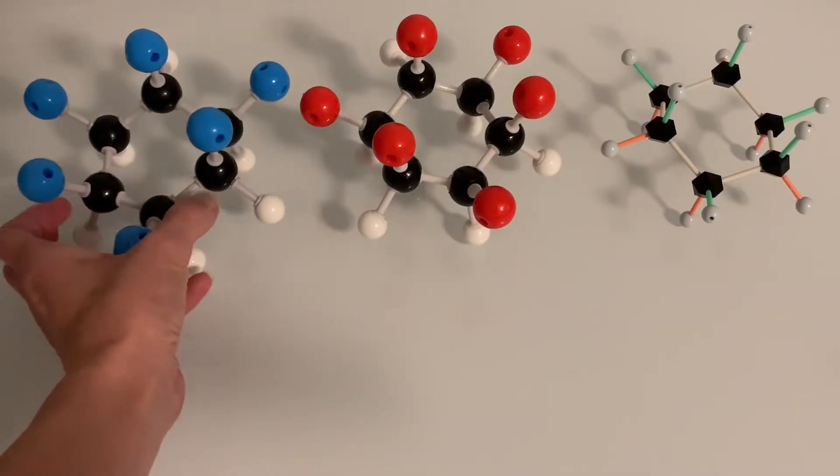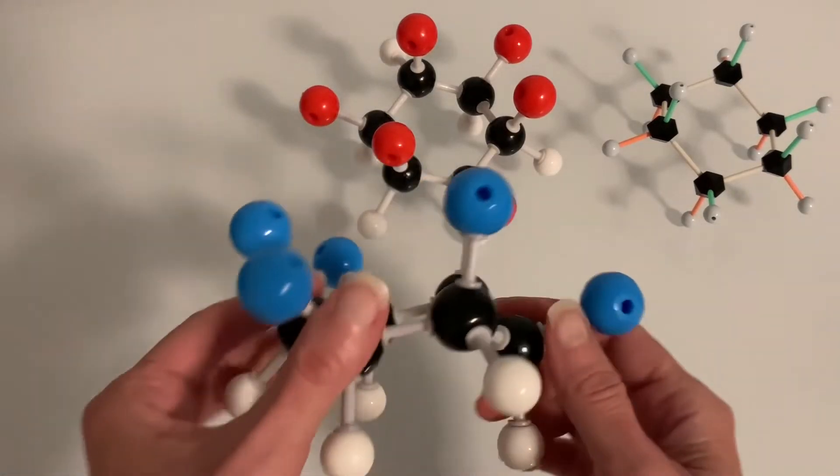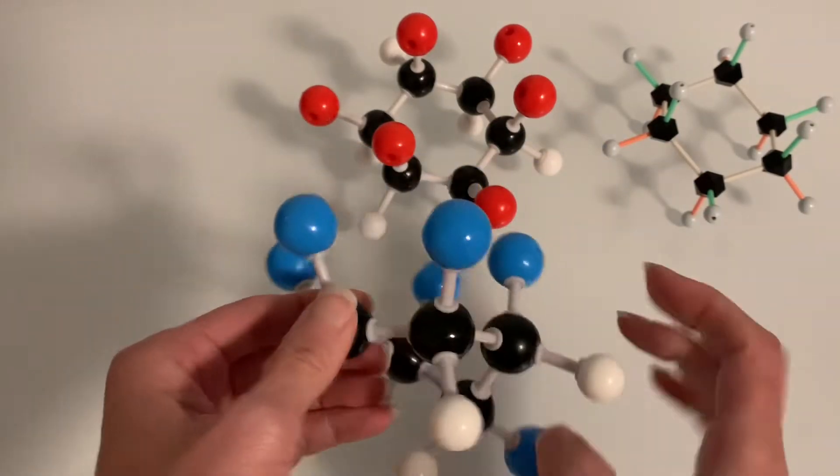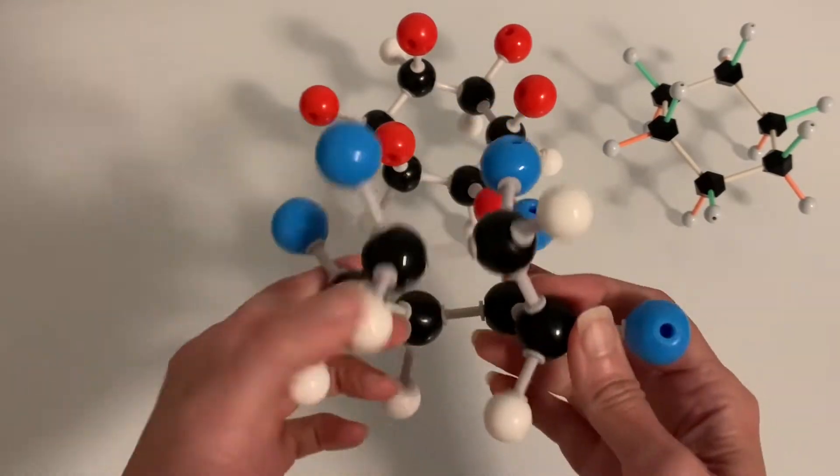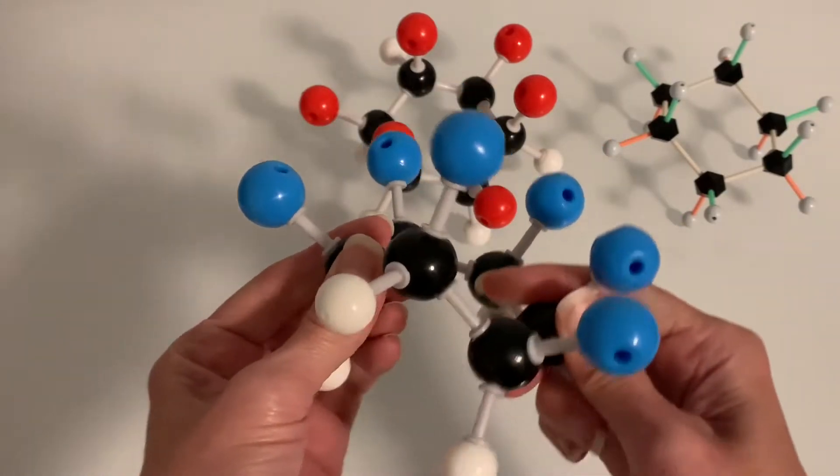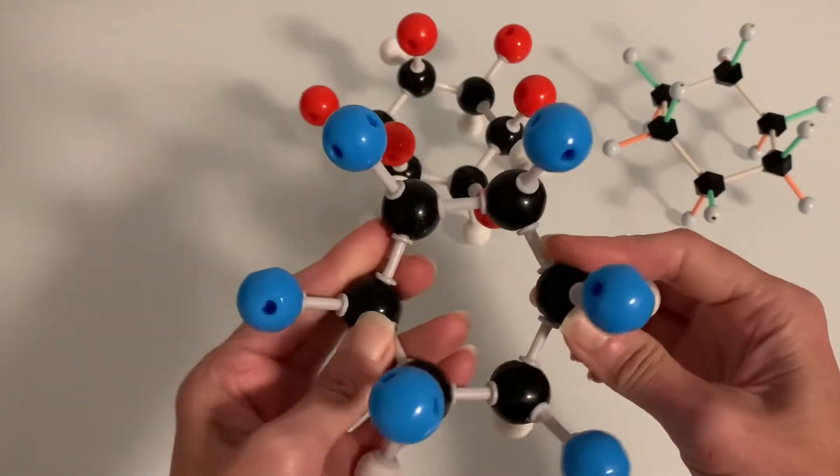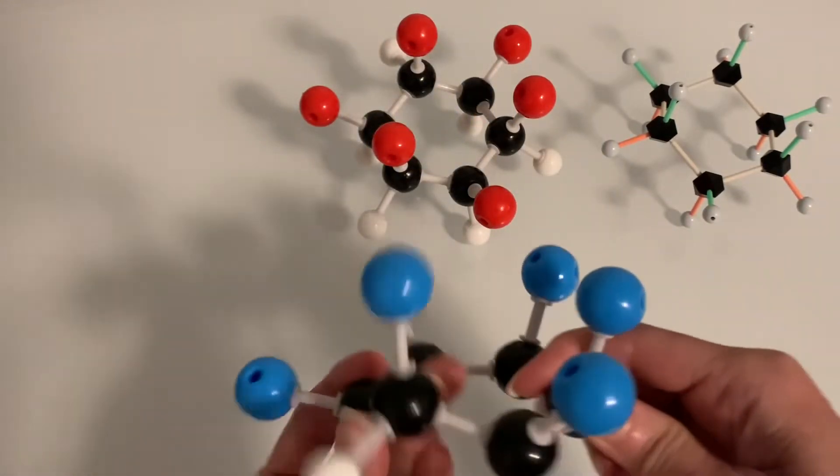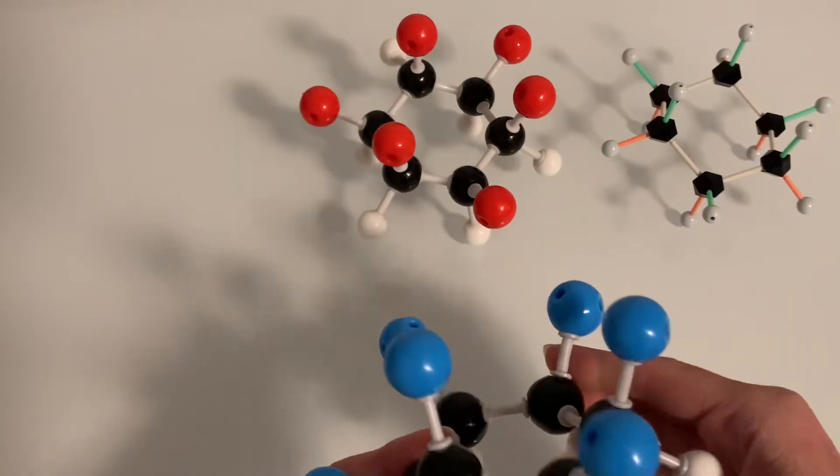I used each set to build a model of cyclohexane so we could see all three of the sets side by side. This first one that we're looking at with the blue atoms is the cyclohexane model that I built using the Linktour set and to be honest I don't love it. You see how the molecule is just kind of flopping around as I'm using it. It's really difficult to get this folded into a good conformation or shape of cyclohexane. It's difficult to see the bond angles.